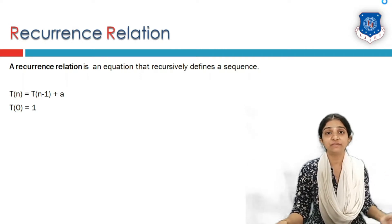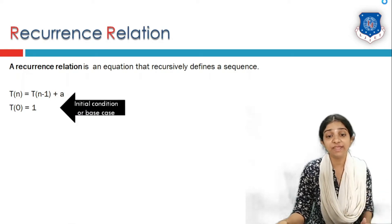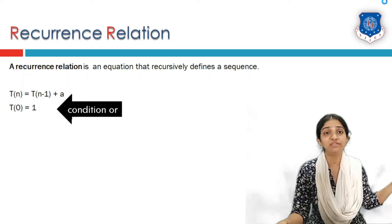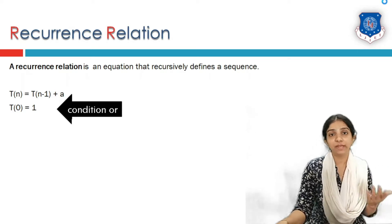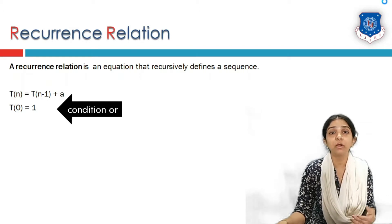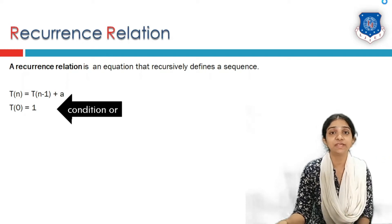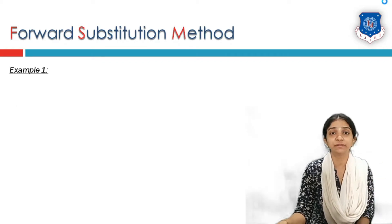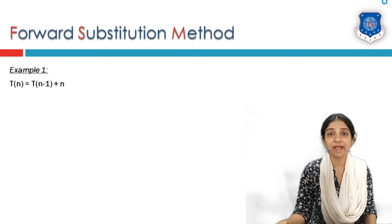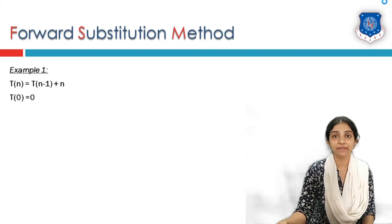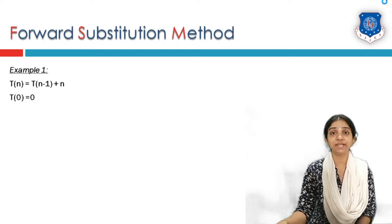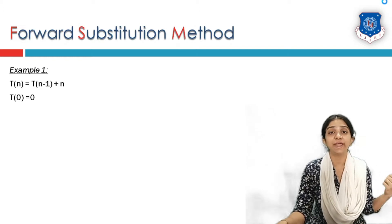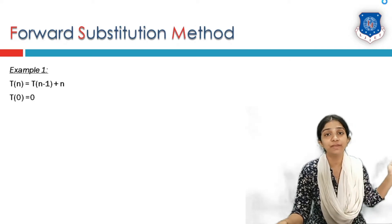In a recurrence relation we also require a base case or an initial condition. For example, T(0) = 1 or some value. Now let us see how to obtain the complexity when any recurrence relation is given. In the forward substitution method, say T(n) = T(n-1) + n, with base case T(0) = 0. We are expected to find the Big O notation of the given recurrence relation.